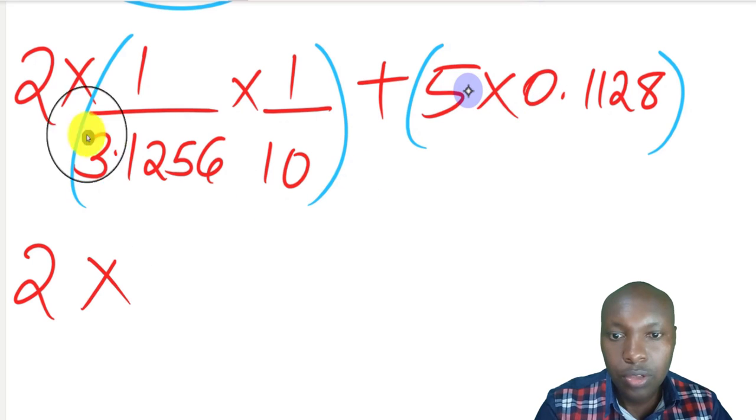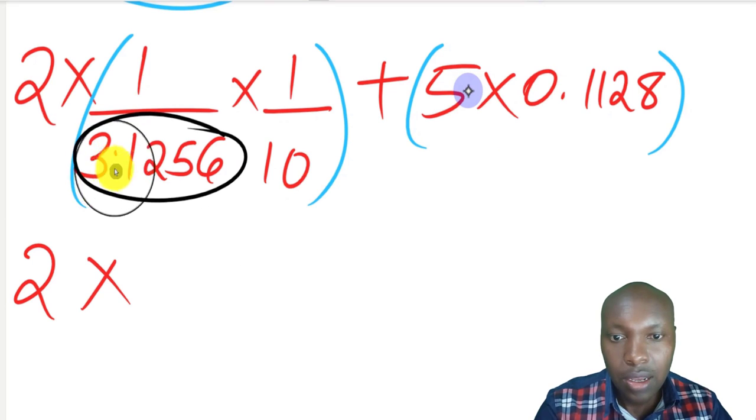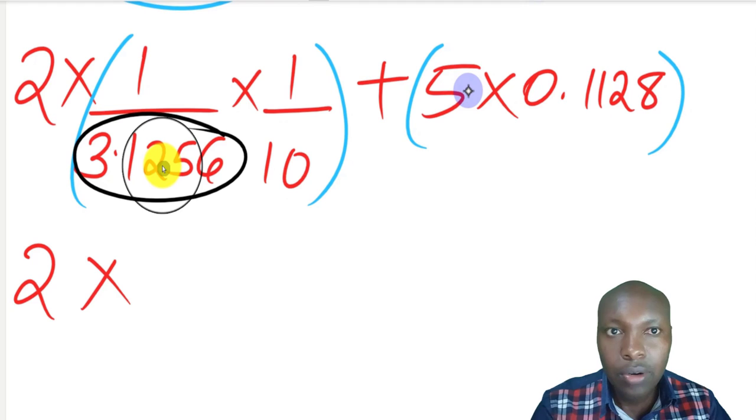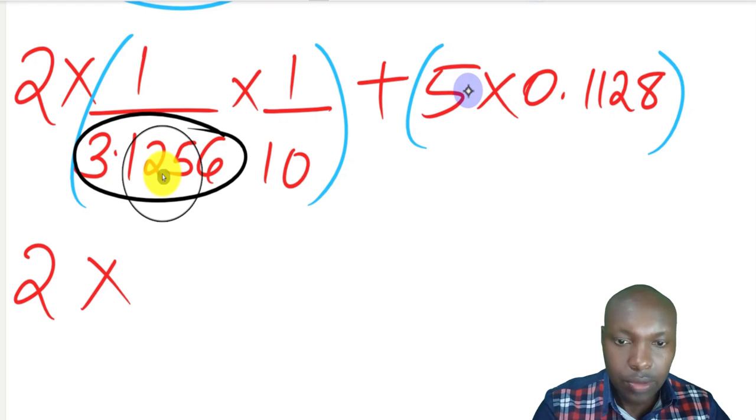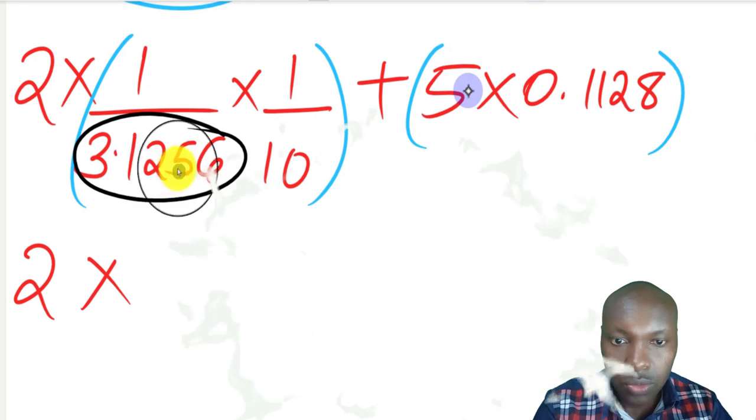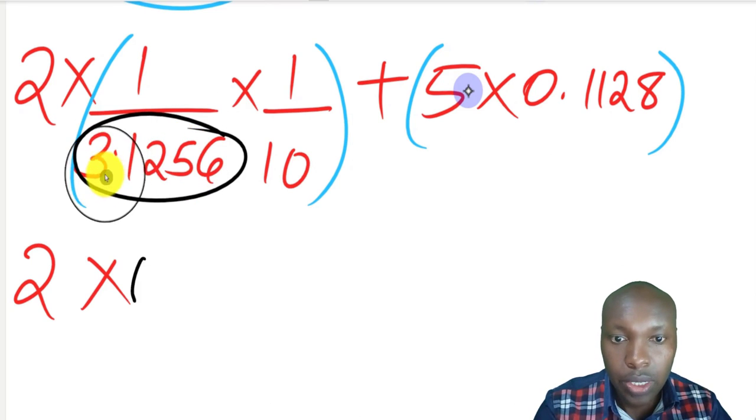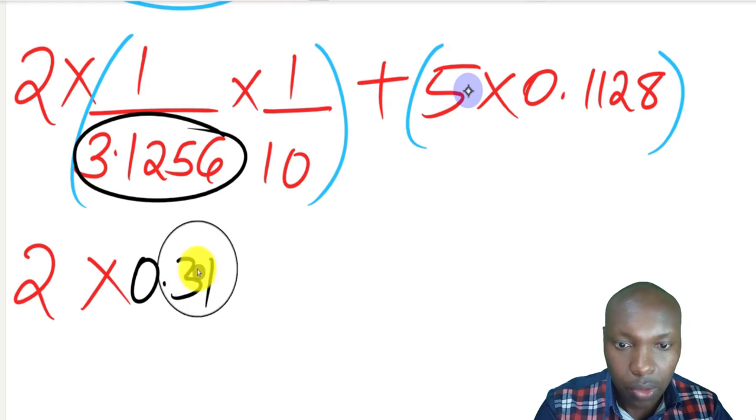Next, we get the reciprocal of 3.1256. You can read that one directly from the table. When you read it directly from the table at 3.126, we shall read up to this point, rounding it up to 4 significant figures. We get 0.3199.